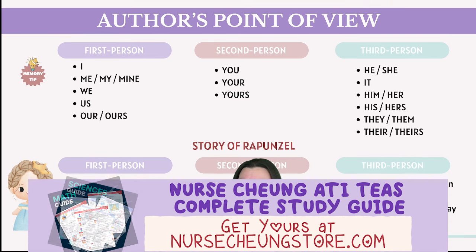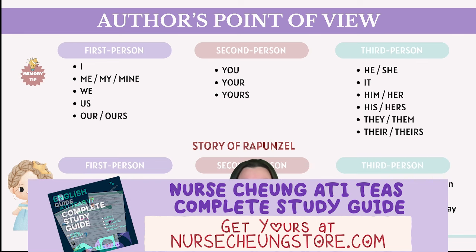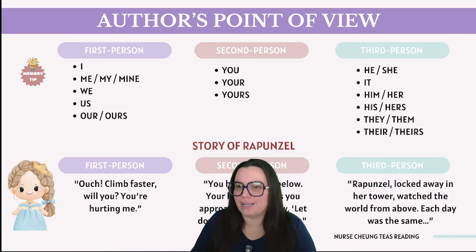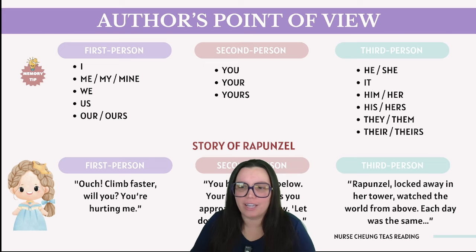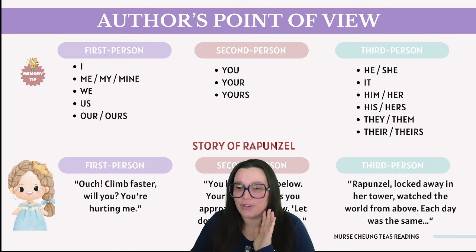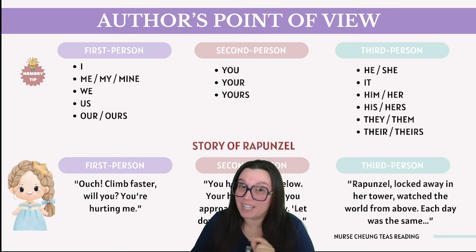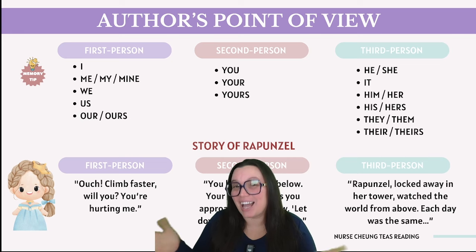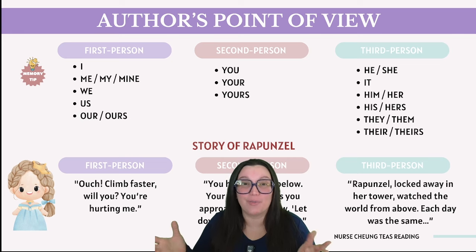Finally, in third person — which is usually how we hear fairy tales, as told by narrators — the narrator states: 'Rapunzel, locked away in her tower, watched the world from above. Each day was the same until a prince, enchanted by her voice, discovered her. He called to her, Rapunzel, Rapunzel, let down your hair. And she cautiously, curiously, complied.' All three versions completely change the story. That's what we're talking about when figuring out first, second, and third person point of view.